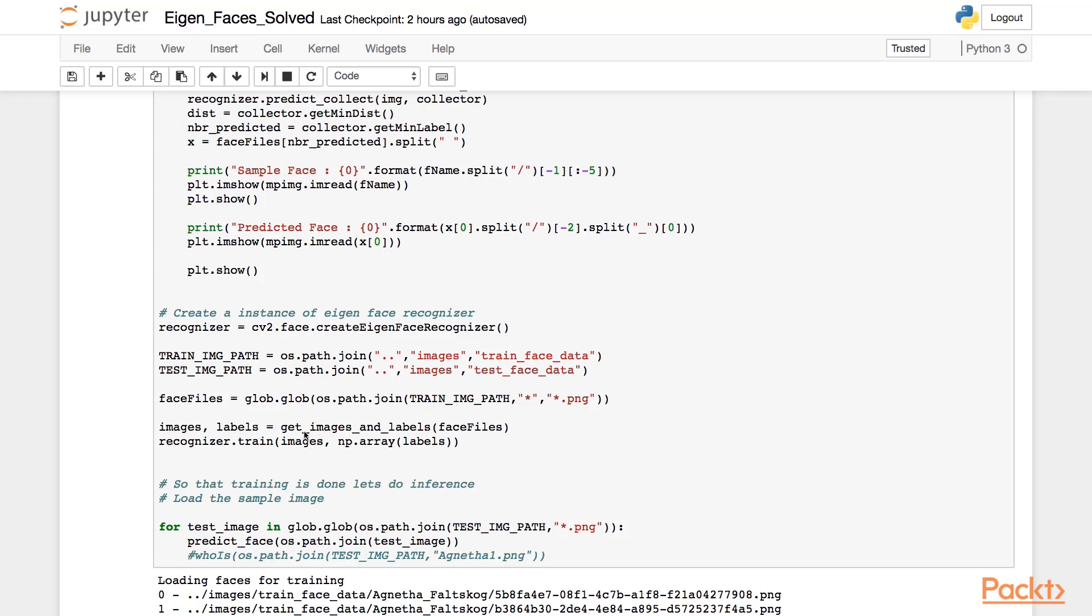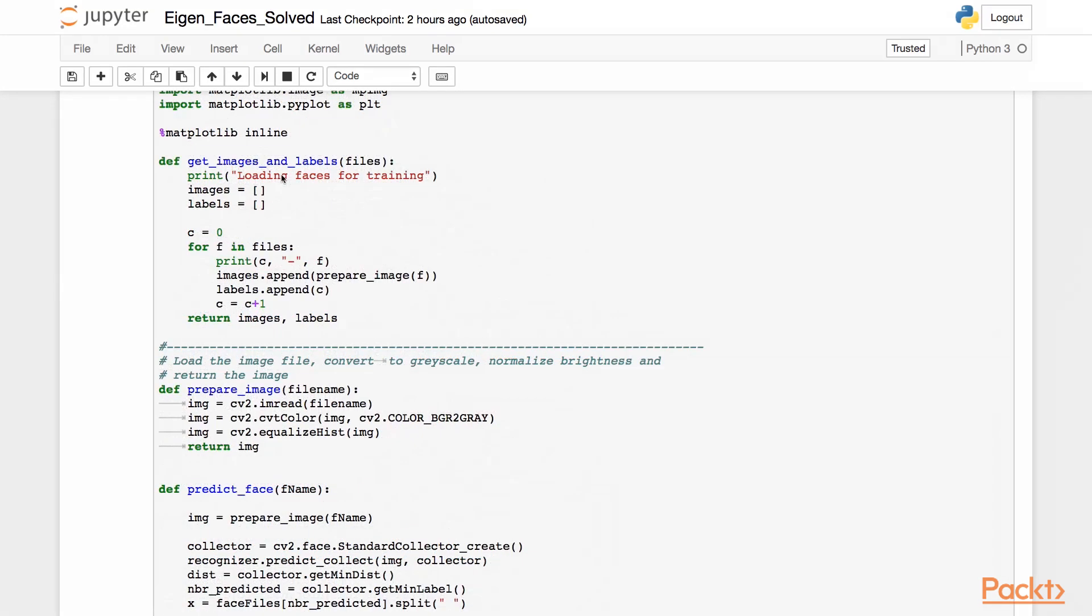Let's quickly see the implementation of get images and labels. The function takes in all the training image files, loops through them, and per image it calls the function prepare image and appends it to an image list. Similarly, it appends the label to the labels list and returns the images and all the labels.